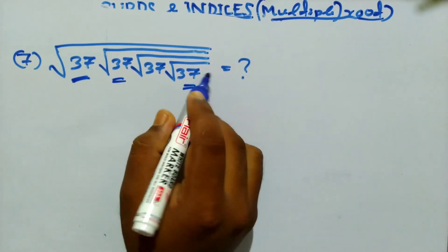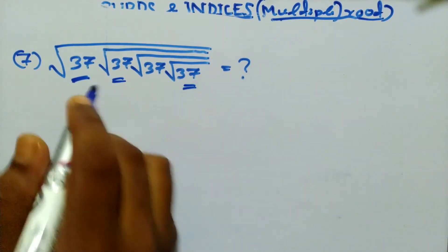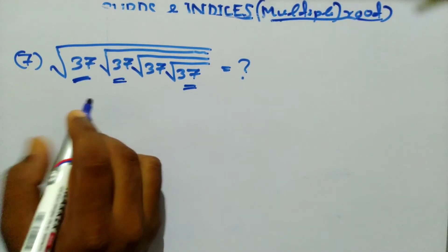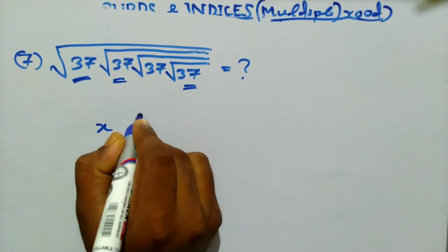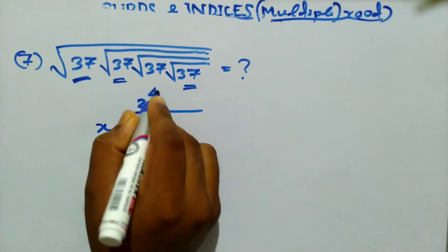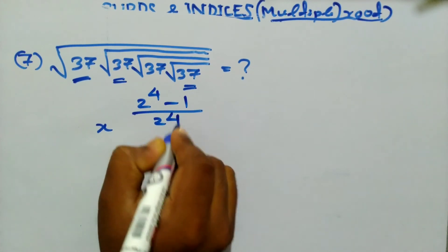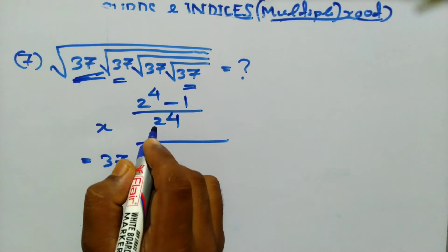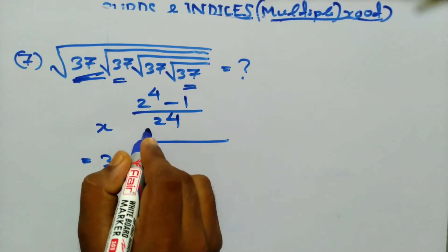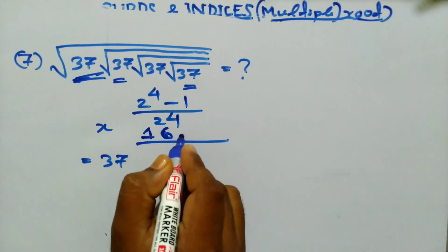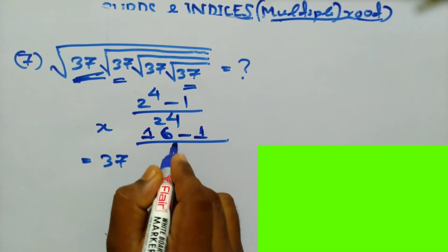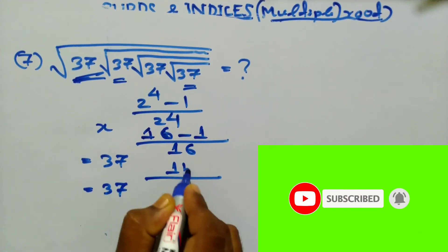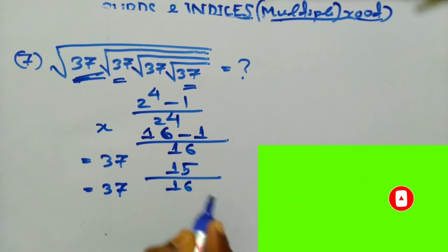Next question: root 37 into root 37, up to 4 terms — not infinity. When this type of question is given, apply the formula: x to the power (2^n - 1) / (2^n), where n is the number of terms. Here x is 37 and n is 4, so it becomes 37 to the power (16 - 1) / 16 = 37 to the power 15/16. This is the answer.